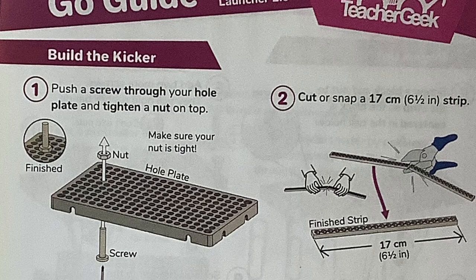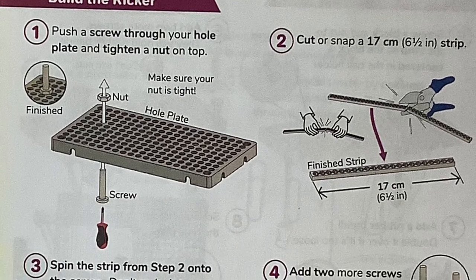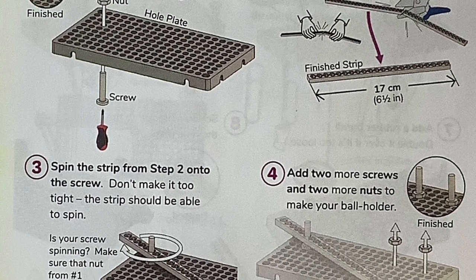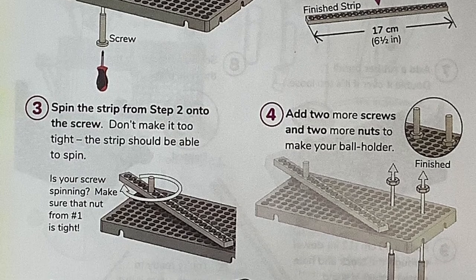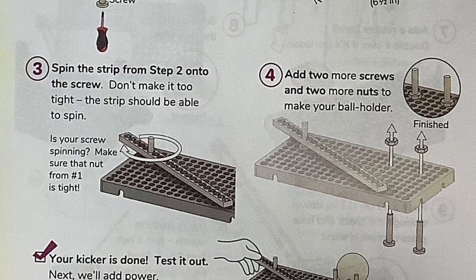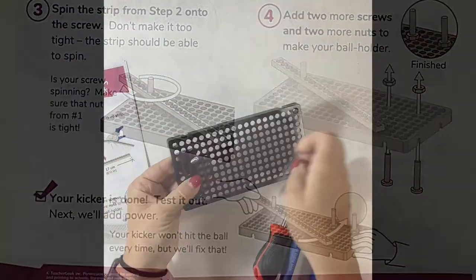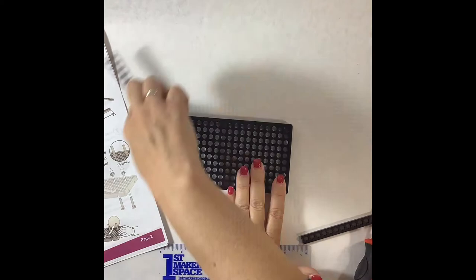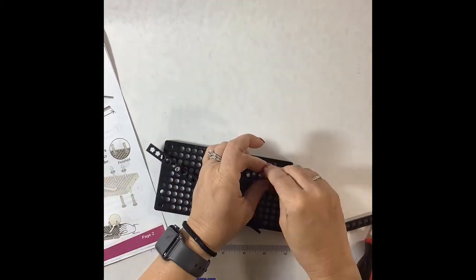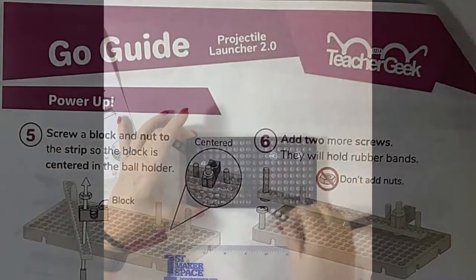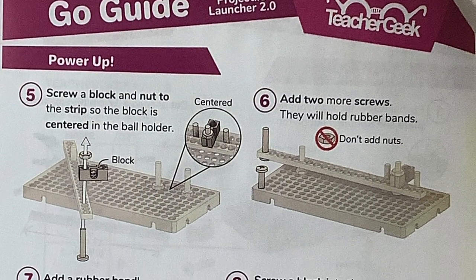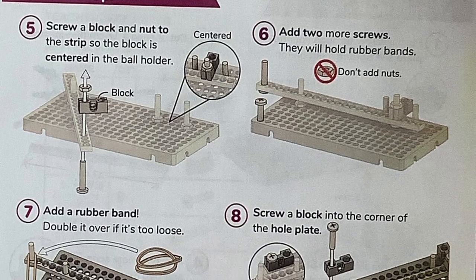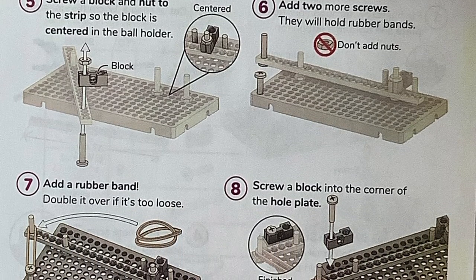Following the build guide directions, you're now ready to start this Projectile Launcher build. You're going to begin with the whole plate and begin by screwing different pieces in to create the lever that will project the ping pong ball into the air. In the next set of directions, you're going to attach a few more pieces that will control the power and the force that the lever has when launching your ping pong ball.